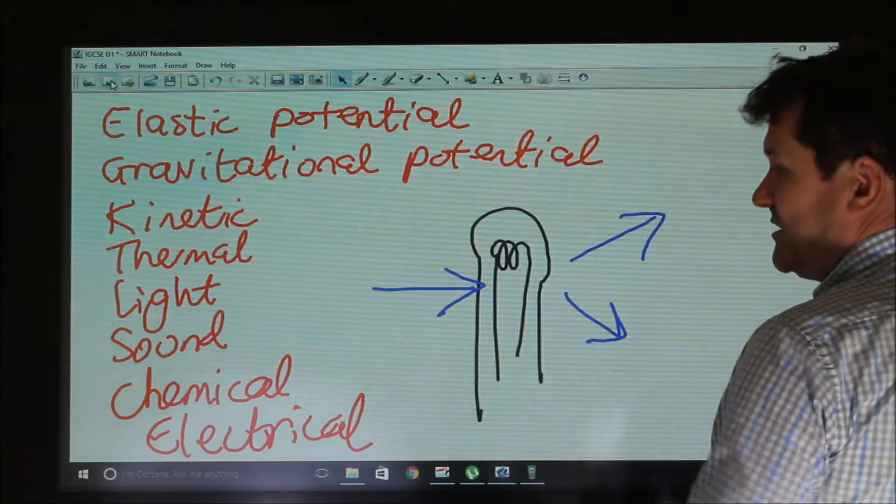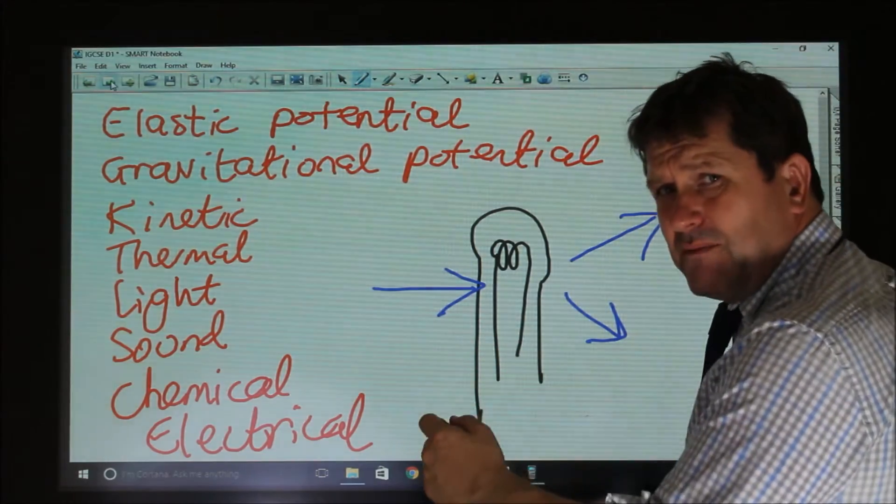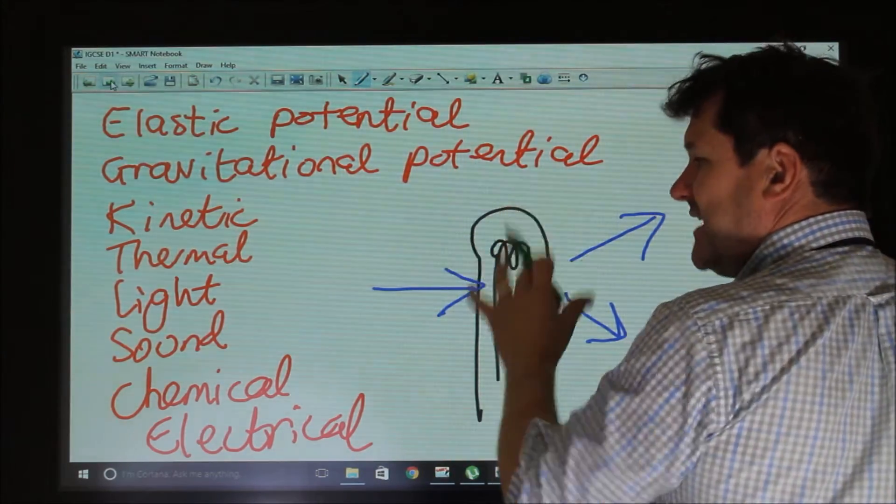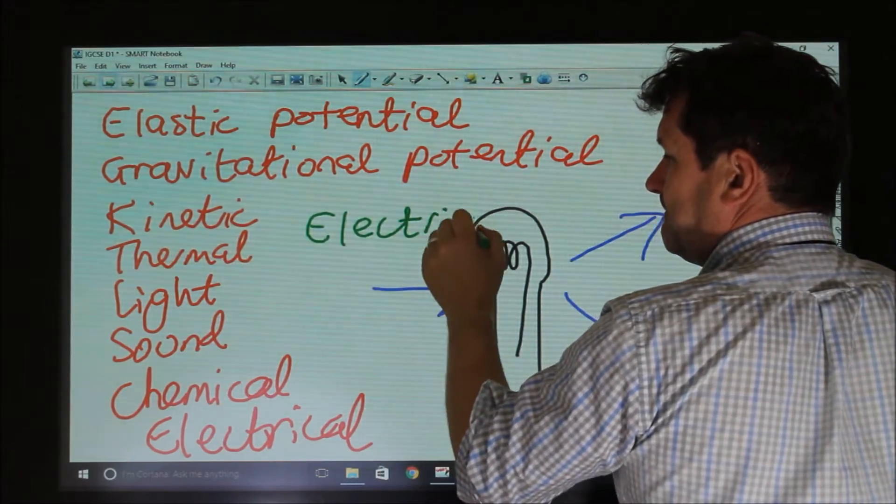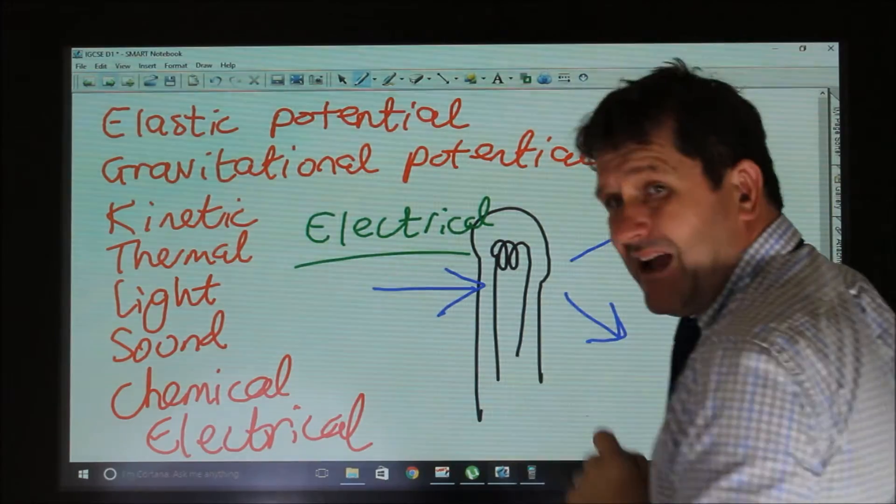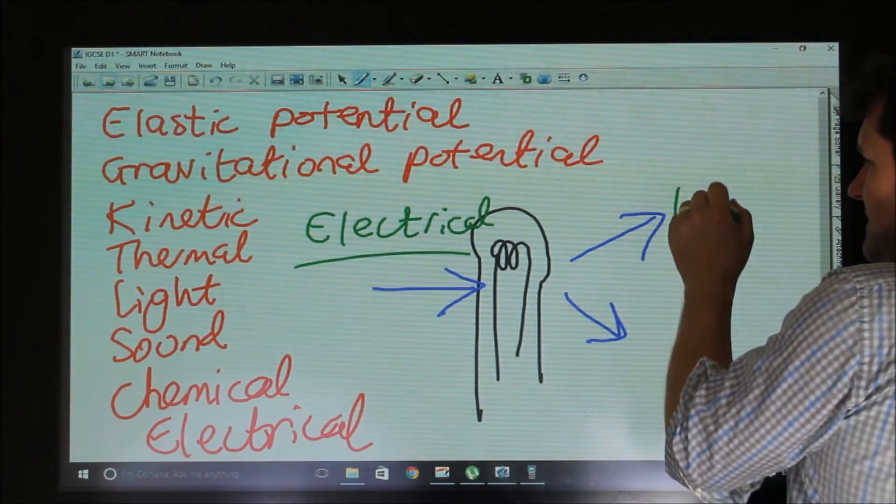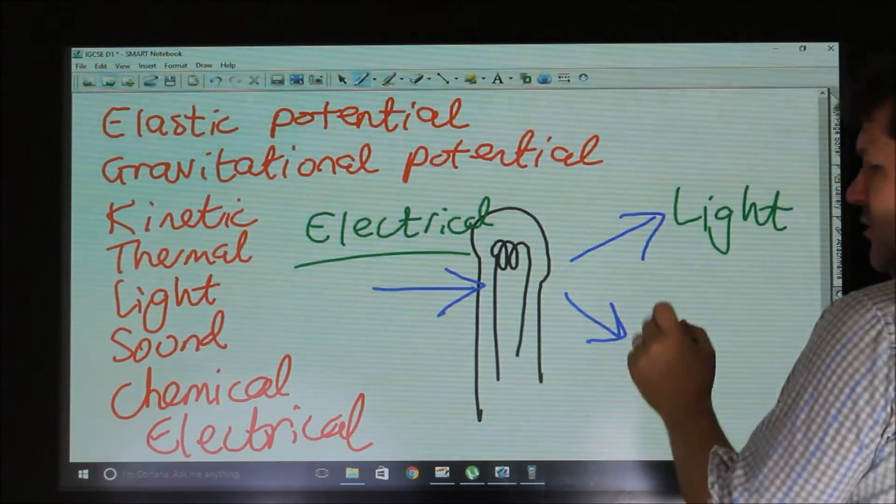Now, the energy going into a light bulb, my terribly drawn light bulb, apologies. The energy going into a light bulb is electrical energy. Now, the energy coming out is light and also heat.